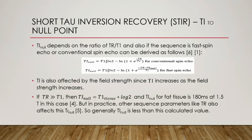How do we select this Ti to null point? Ti null depends on the ratio of TR over T1 and also on whether the sequence is fast spin echo or conventional spin echo. It is also affected by field strength since T1 increases as the field strength increases. If TR is much larger than T1, then Ti null equals T1 of the tissue multiplied by ln2. Ti null for fat tissue is 180 ms at 1.5 tesla in this case. But in practice, other sequence parameters like TR also affect Ti null, so generally Ti null is less than this calculated value.